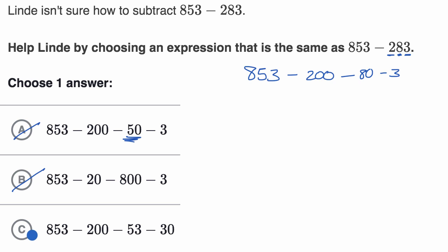Now it's probably going to be this one, but let's just make sure we feel comfortable with this. So this one has 853 minus 200 minus 53 minus 30. Does that make sense? Well, let's think about it.